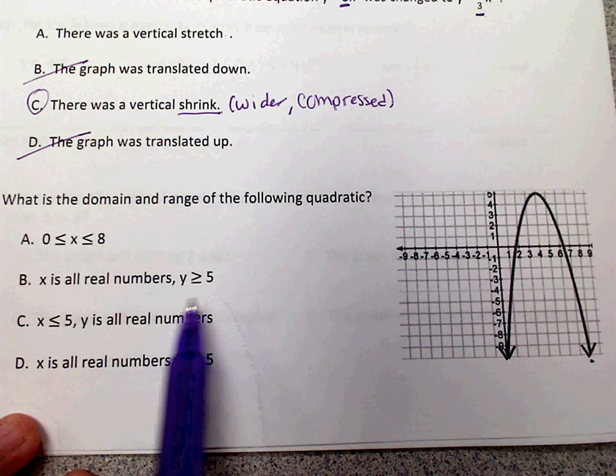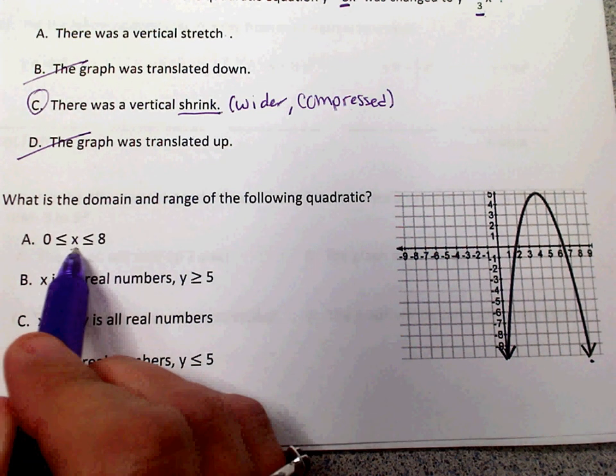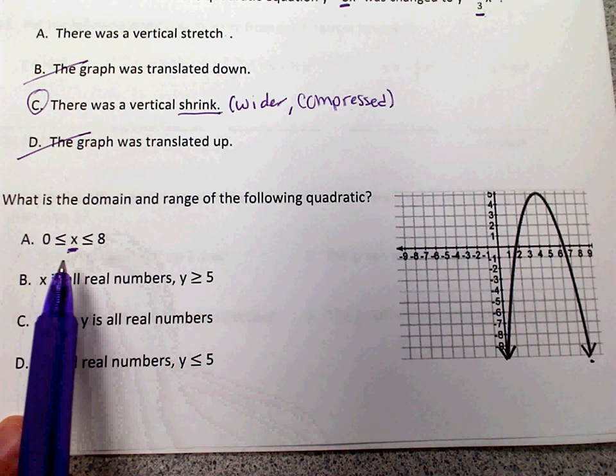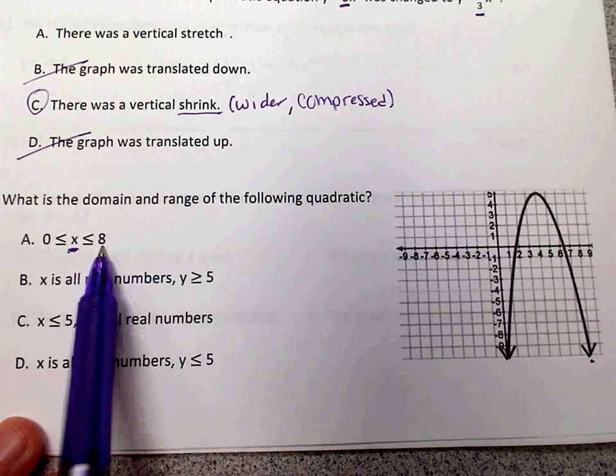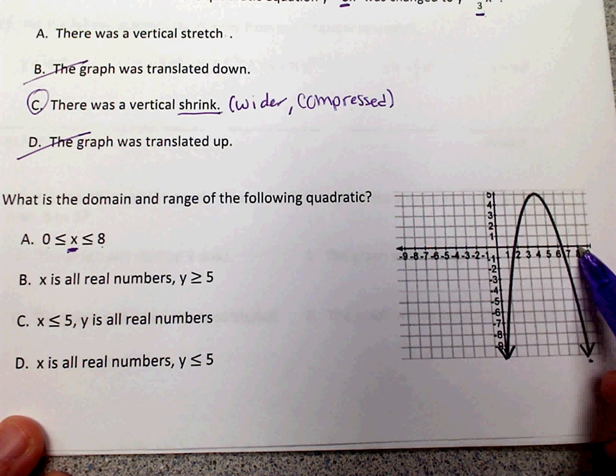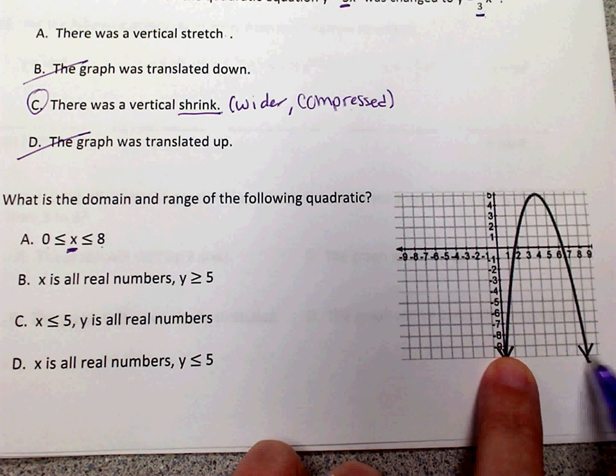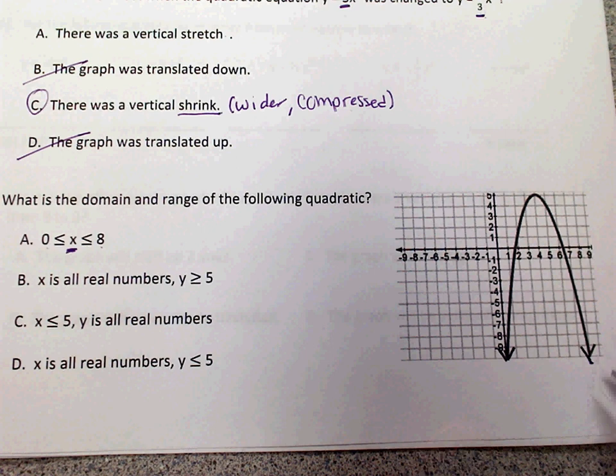Now you'll notice that the way the answers are written, this one says x. X is domain, so this is saying that the domain is between zero and eight. So it's saying from here to here. Well, that's saying if these didn't have arrows, then yes, that would be true. But these have arrows, so that means it keeps going.